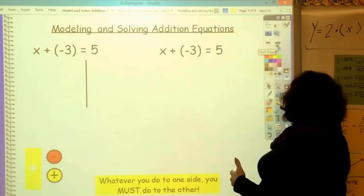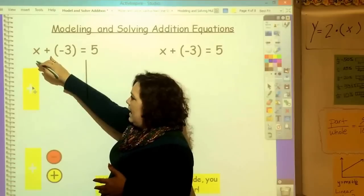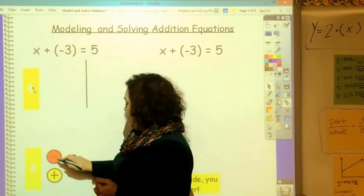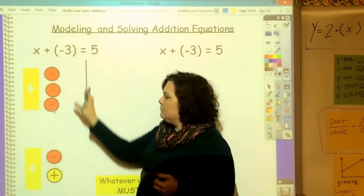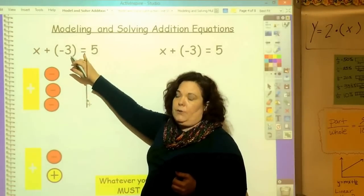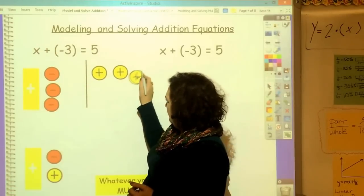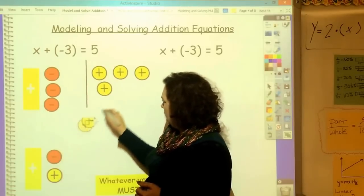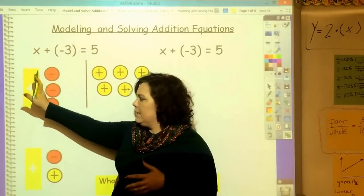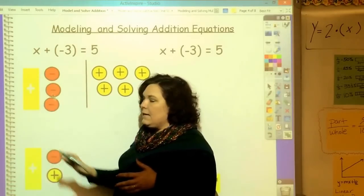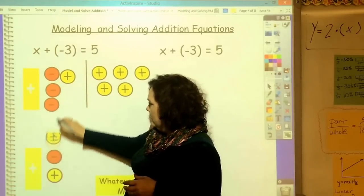Let's try another one with some integers. I have x represented by this bar, and adding a negative 3. Negative 3 would be three red ones. 1, 2, 3. And on this side, this bar means equal to, and on this side is equal to 5, 5 positive. Now, I have to do, I'm trying to get x by itself. I've got three negatives here. The only way I can get rid of them is to add three positives. That's undoing.